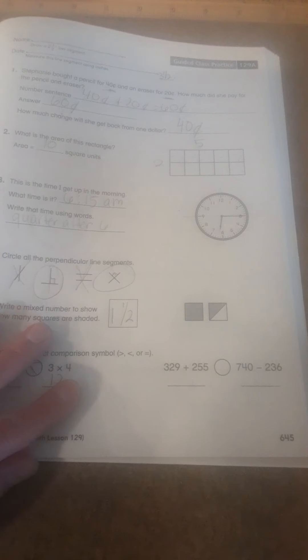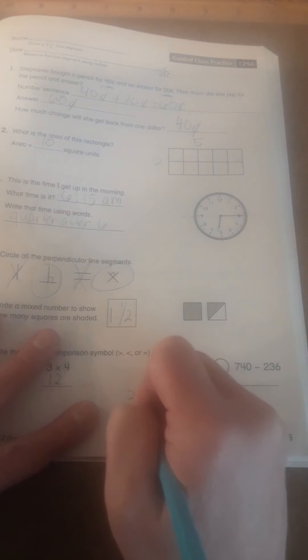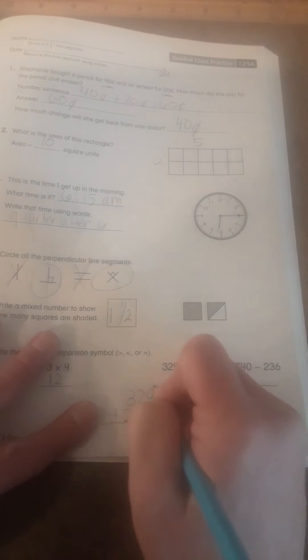329 plus 255, and 740 minus 236. So I'm going to have to show my work for this one. 9 plus 5 is 14. Carry the 1, bring down the 4. 5 plus 2 plus 1 is 8. And 3 plus 2 is 5. So I have 584 here.